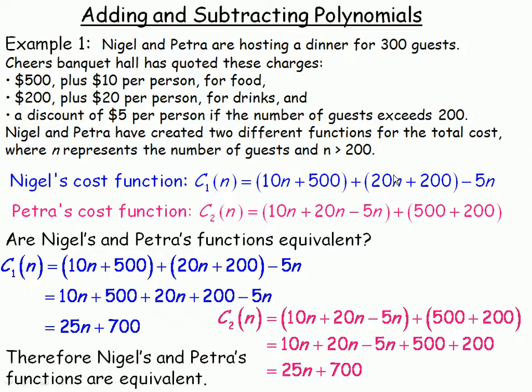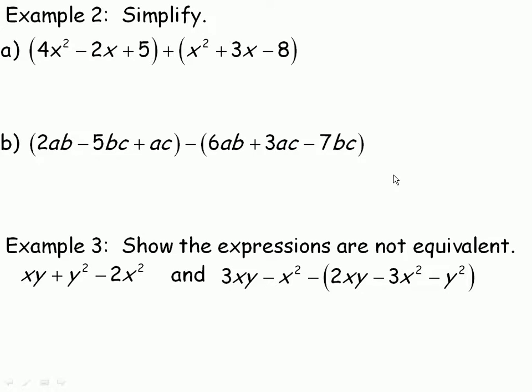Flipping over to the example on the second page, there's two here. The first one we're asked to simplify and we're adding these two polynomials together. Now when we're adding, we'll just remove the brackets. This polynomial will stay exactly the same. And we're adding x squared plus 3x minus 8. So plus x squared plus 3x minus 8.